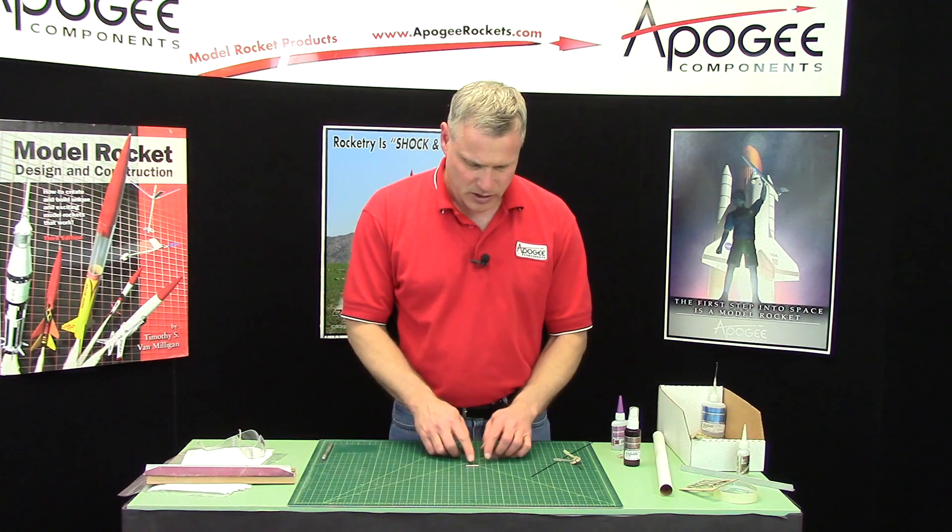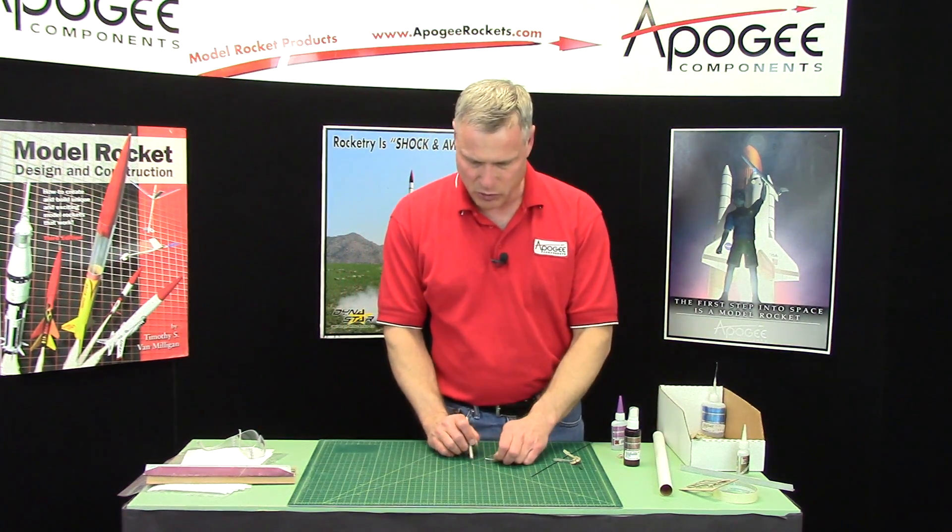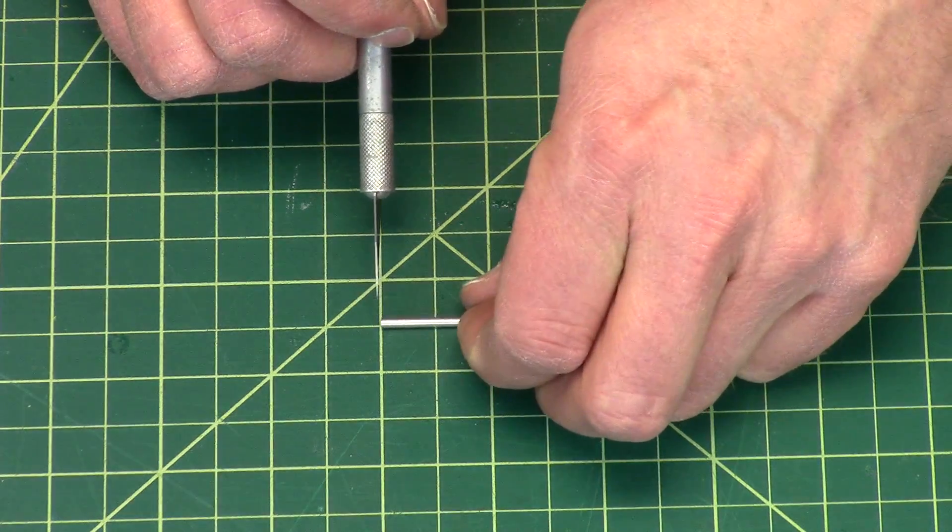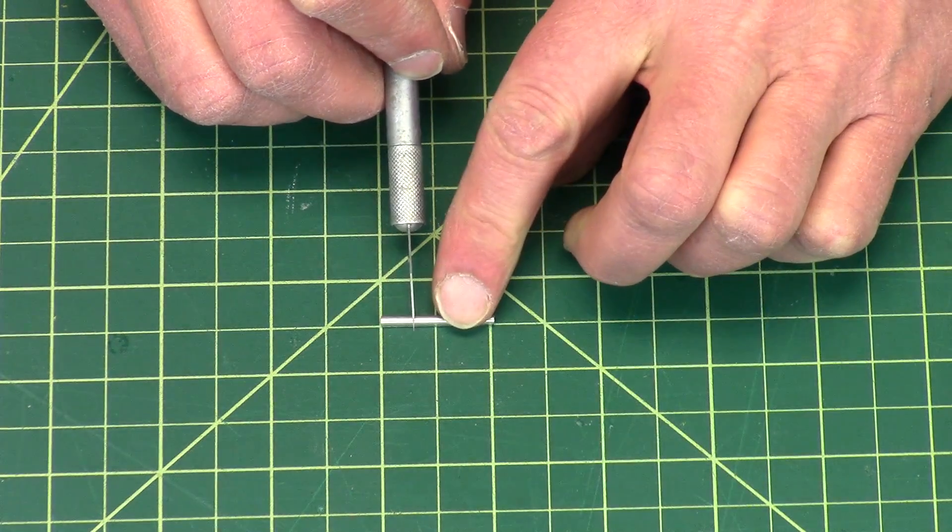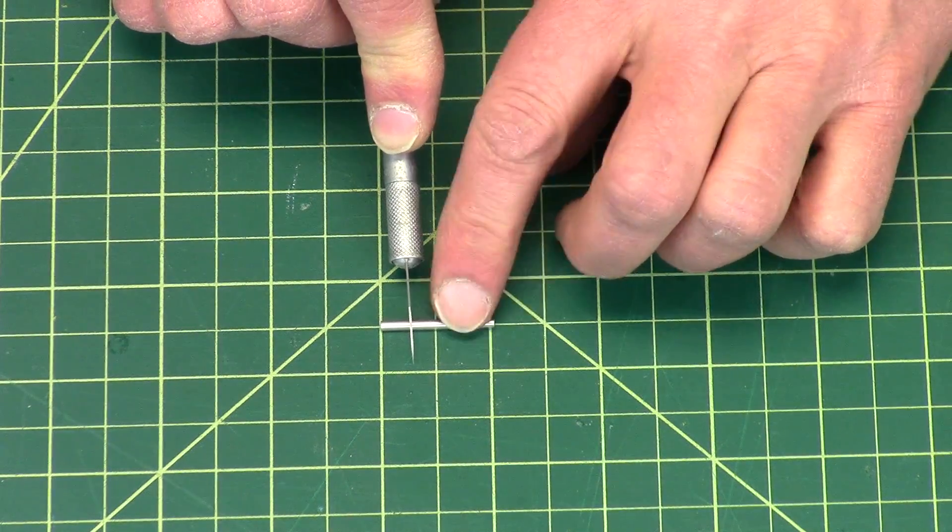We need to cut this three quarters of an inch, so on my board here I've got one inch squares, so I'm just going to cut off about half of a square, so that's three quarters of an inch on this side.